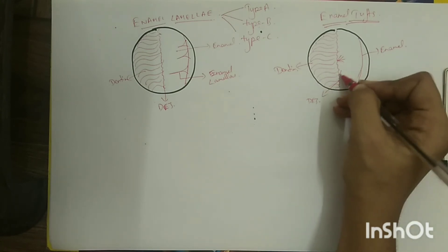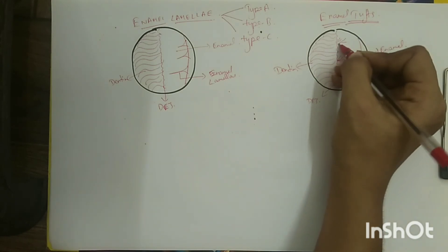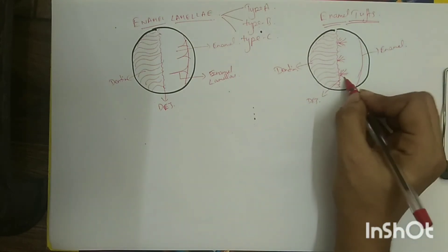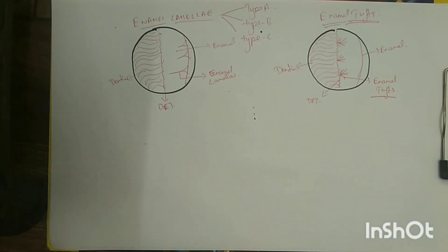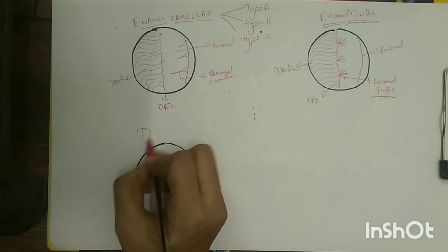Like the enamel lamellae, these structures are made up of hypocalcified enamel rods and have more organic component in them. Enamel tufts are much more numerous than enamel lamellae and both structures persist even after decalcification.